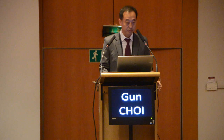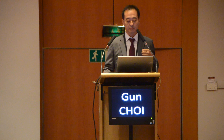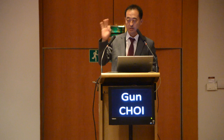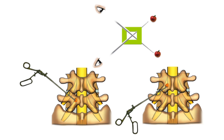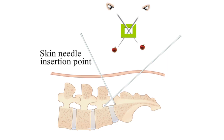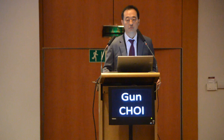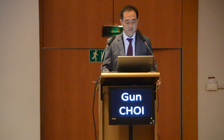For lumbar disc surgery, the skin entry point is very, very important because the discoscope is a rigid scope. The entrance is only via the transforaminal or interlaminal route. For unmigrated disc conditions, we have to make the skin entry point quite below. For down-migrated disc, the skin entry point should be different. You have to decide before surgery based on imaging — this strategy is very important for successful surgery.